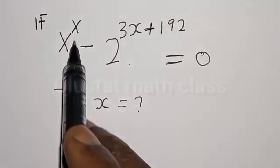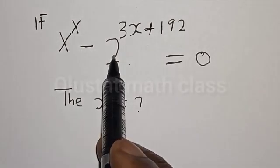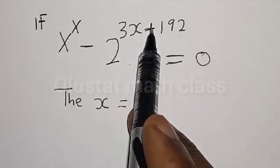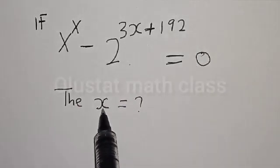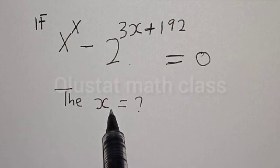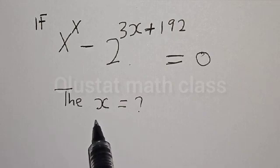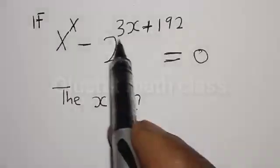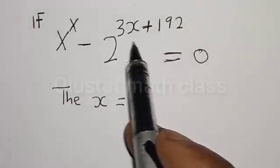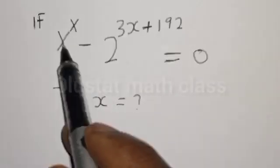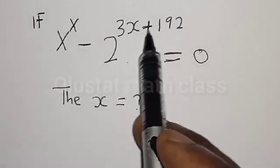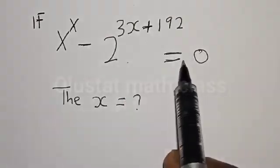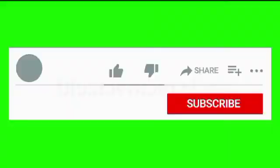If s raised to power s minus 2 raised to power 3s plus 192 is equal to 0, then what is the value of s? Hi everyone, welcome to my class. In today's class, we want to find the value of s from this given exponential equation: s raised to power s minus 2 raised to power 3s plus 192 is equal to 0.